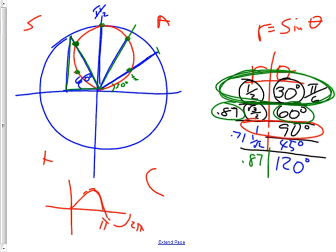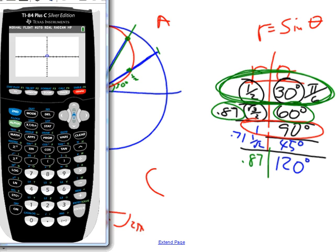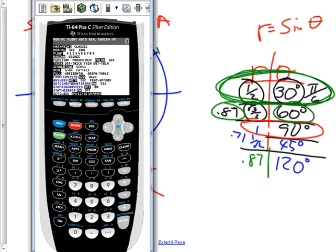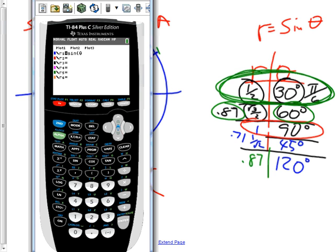Everybody grab your graphing calculator and go to MODE. Choose polar mode. You also want to be in radians. Once you're in polar and radians, hit Y= and it now says R=. Type in sine theta — theta is where the X key is; it says X, T, theta, N, and it automatically selects theta when in polar mode. Hit GRAPH and there's your graph.